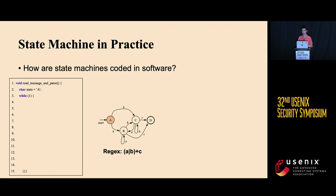Suppose we want to implement a parser for a regular expression that starts with a sequence of A or B and ends with character C. An example state machine is shown on the right-hand side. It has four possible states. State A is the start state. After capturing character A or B, it transitions to state B or state C. These two states iteratively read more characters A and B until they capture character C. After that, the state machine enters the final state, state D, indicating the end of parsing. Typically, such a state machine is implemented as a large loop controlled by several state variables, as shown on the left-hand side.